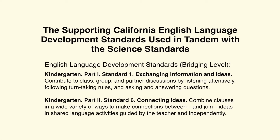The supporting California English Language Development Standards used in tandem with the science standards. The ELD Standards at the bridging level are: Kindergarten Part 1, Standard 1, Exchanging Information and Ideas, where students contribute to class, group, and partner discussions by listening attentively, following turn-taking rules, and asking and answering questions. And Kindergarten Part 2, Standard 6, Connecting Ideas, where students combine clauses in a wide variety of ways to make connections between and join ideas in shared language activities guided by the teacher and independently. Watch how students move from early levels of proficiency toward the bridging levels of these ELD Standards throughout the lesson.